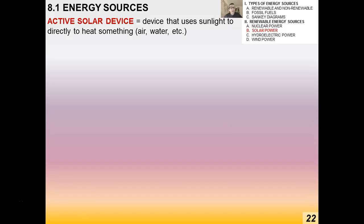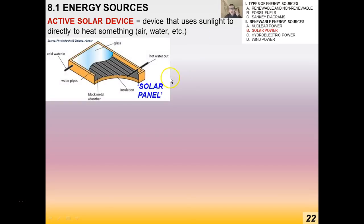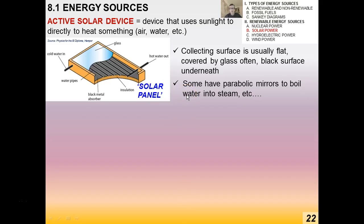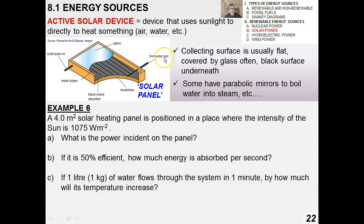There are two types of solar devices. The first is an active solar device — any device that uses sunlight to directly heat something like air or water. For example, black barrels on rooftops in many countries heat water for household use. A typical solar panel is a flat collecting surface covered by glass, often with a black surface underneath, and some use parabolic mirrors to boil water into steam.